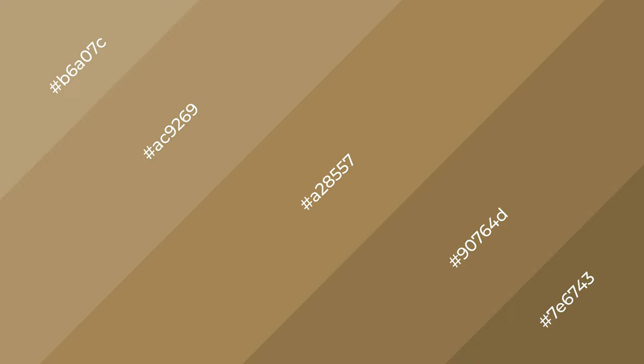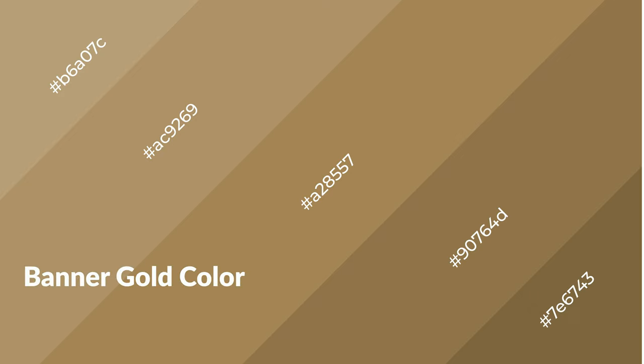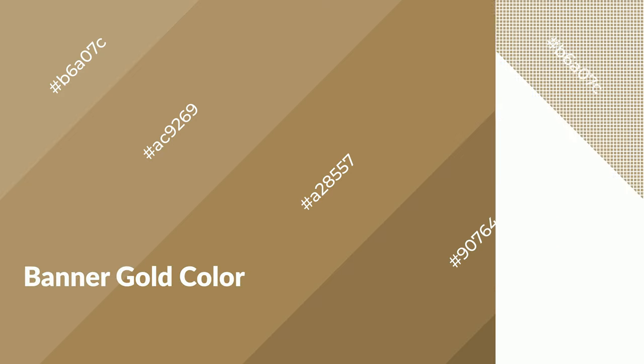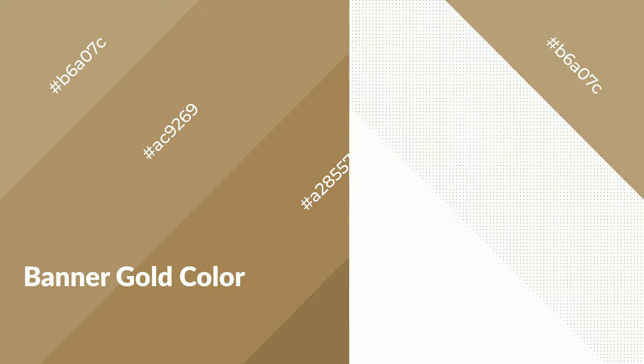To generate shades of a color, we add black to the color. Shades are used in patterns, 3D effects, and layers. Shades create depth and drama. Banner gold is a warm color and it emits cozier and active emotions.